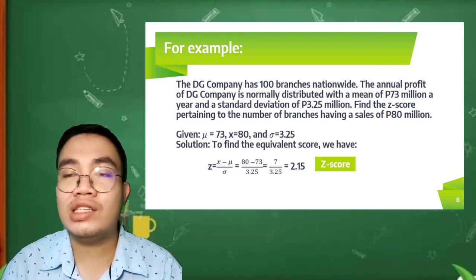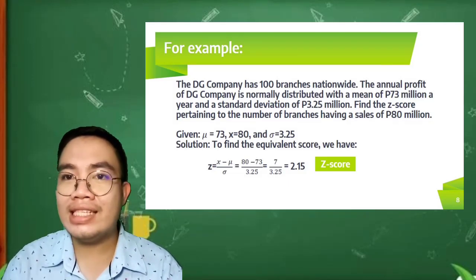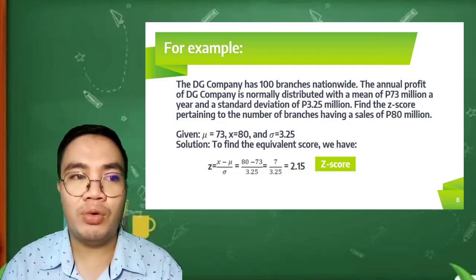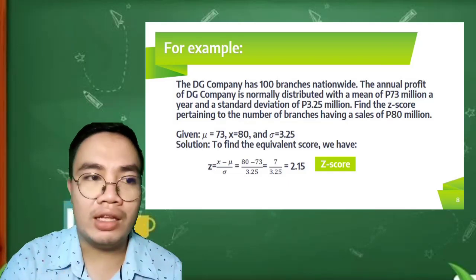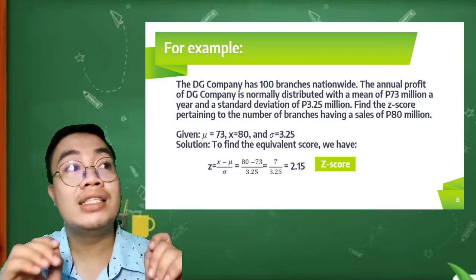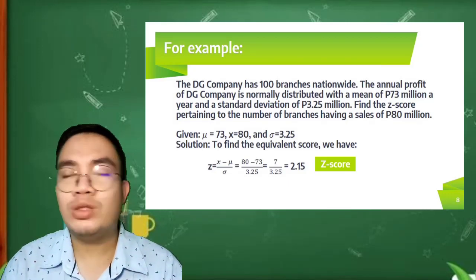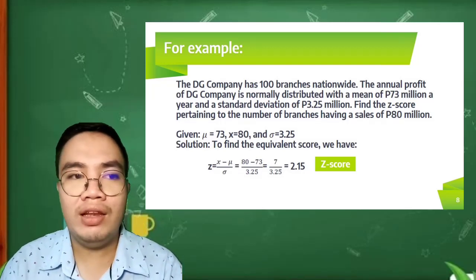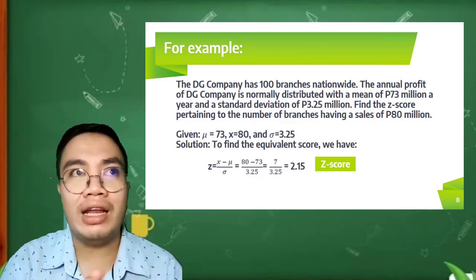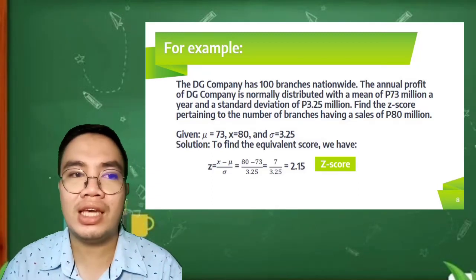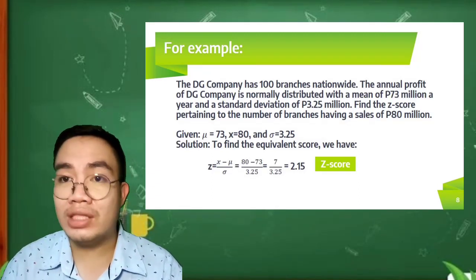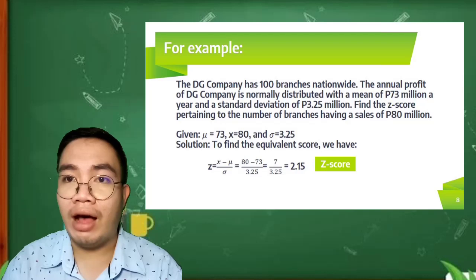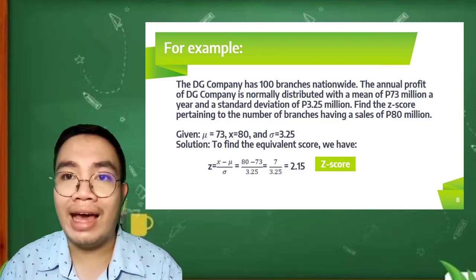For our solution, to find the equivalent score, we have Z equals X minus our mean over our standard deviation. When we indicate the values, we have 80 minus 73 over 3.25, which is the value of our standard deviation. 80 minus 73 gives us 7 over 3.25. So 7 divided by 3.25 gives us 2.15. 2.15 is the value of our Z-score based on the given that we have.